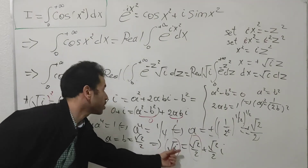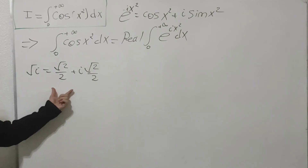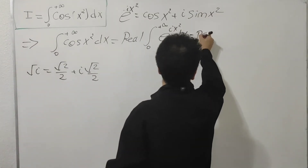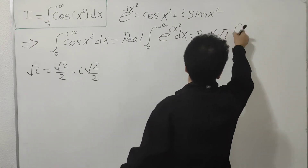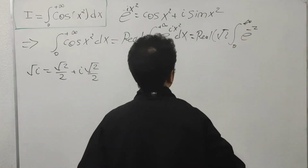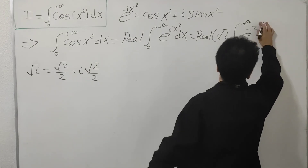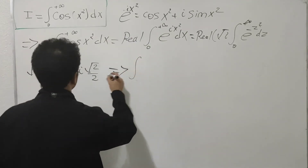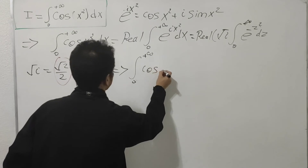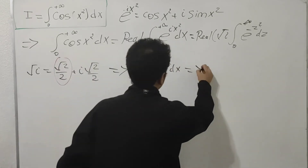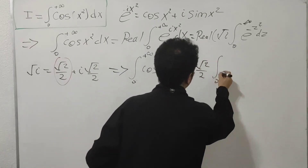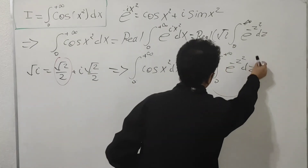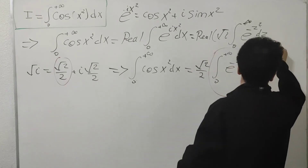Bringing this result back, our integral of cosine(x²) dx from zero to plus infinity equals √2/2 multiplied by the integral from zero to plus infinity of e^(-z²) dz. This integral is the Gaussian integral, whose value equals √π/2.